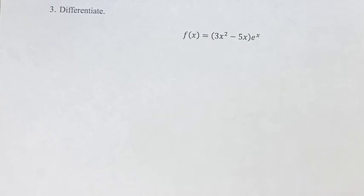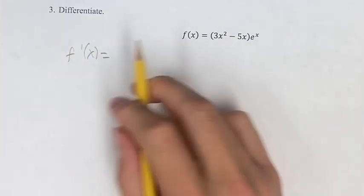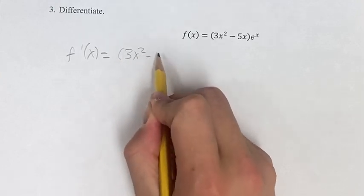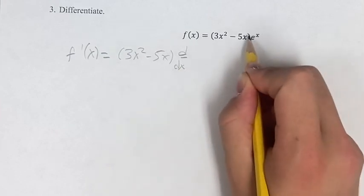The way we're going to do this is using the product rule. So our derivative f'(x) is going to be this term, 3x² - 5x, times the derivative of the other term, e^x.